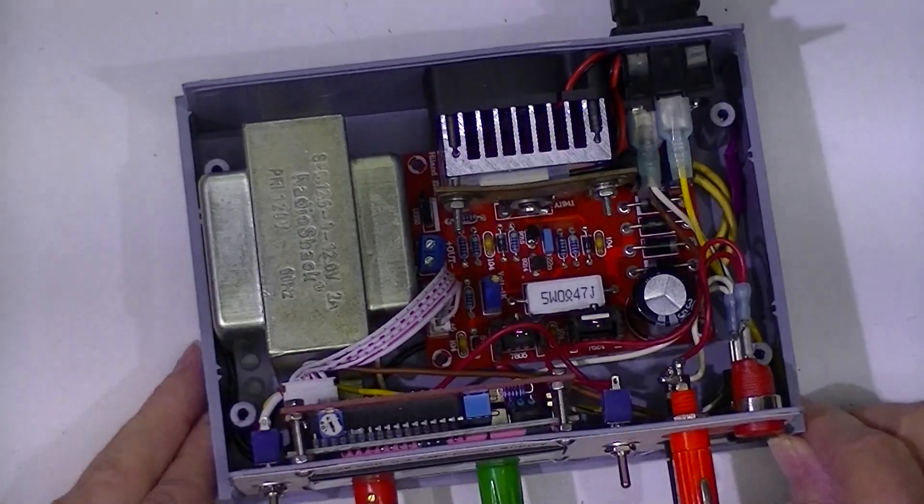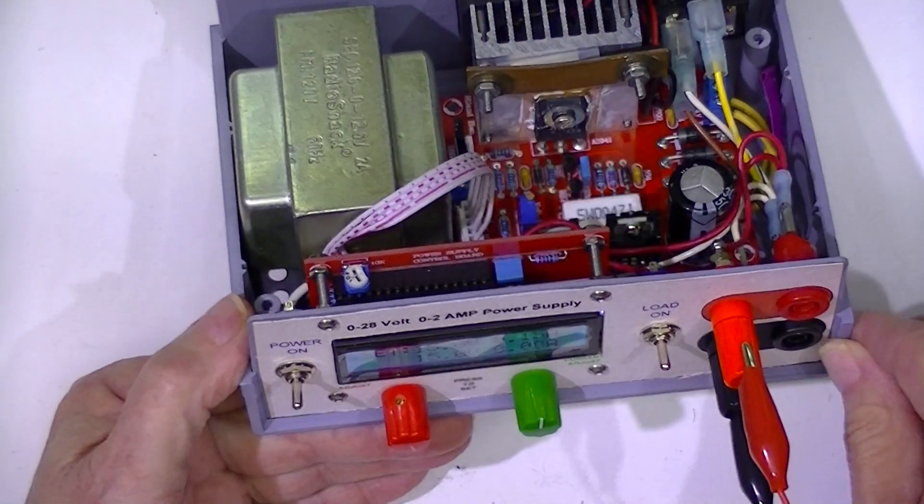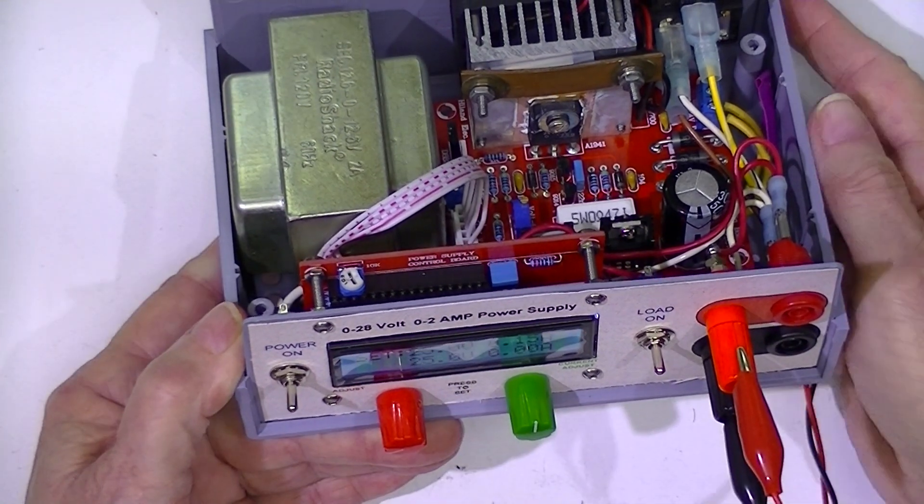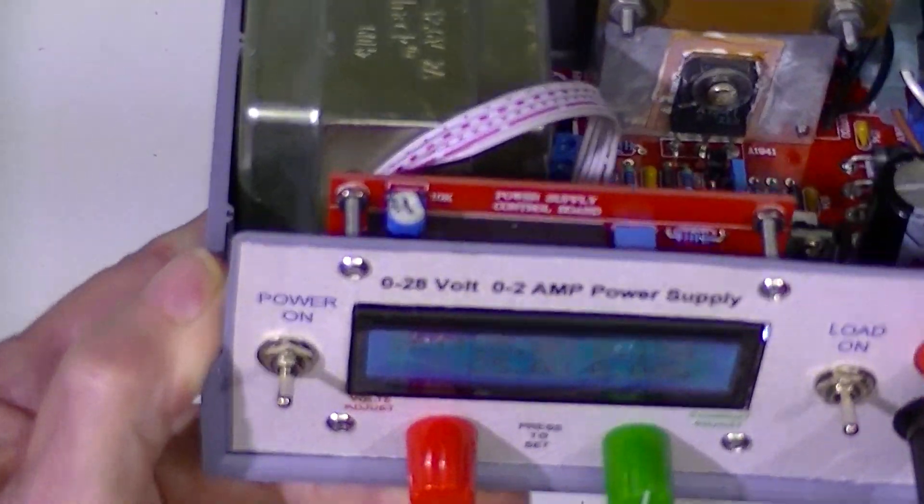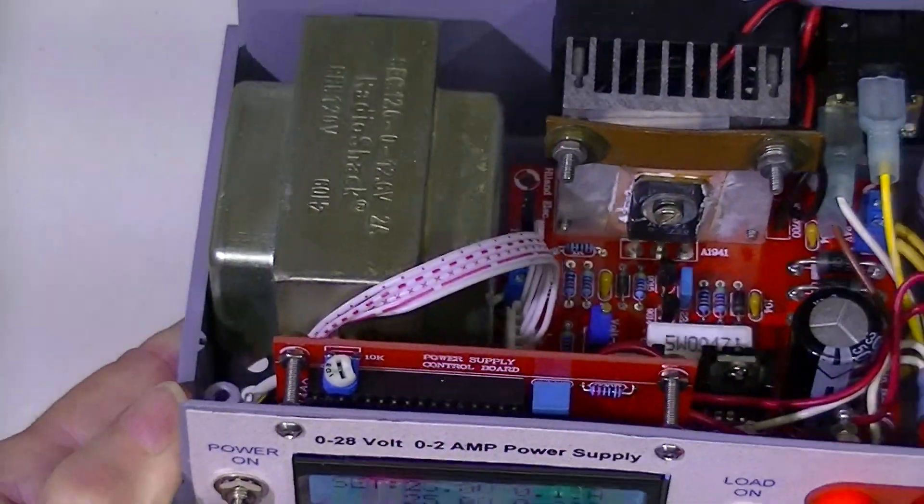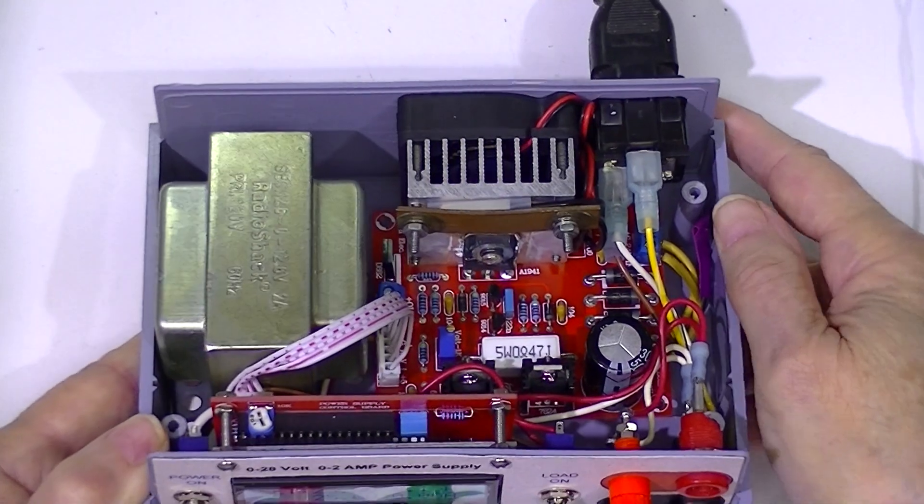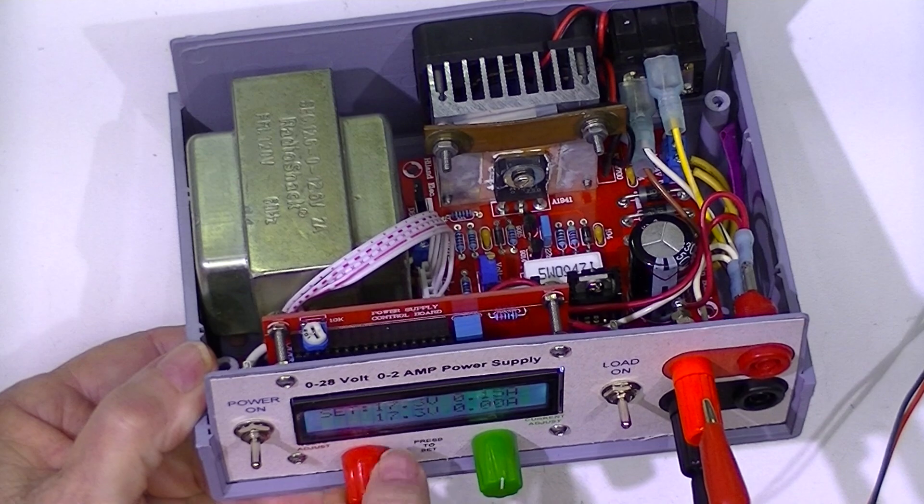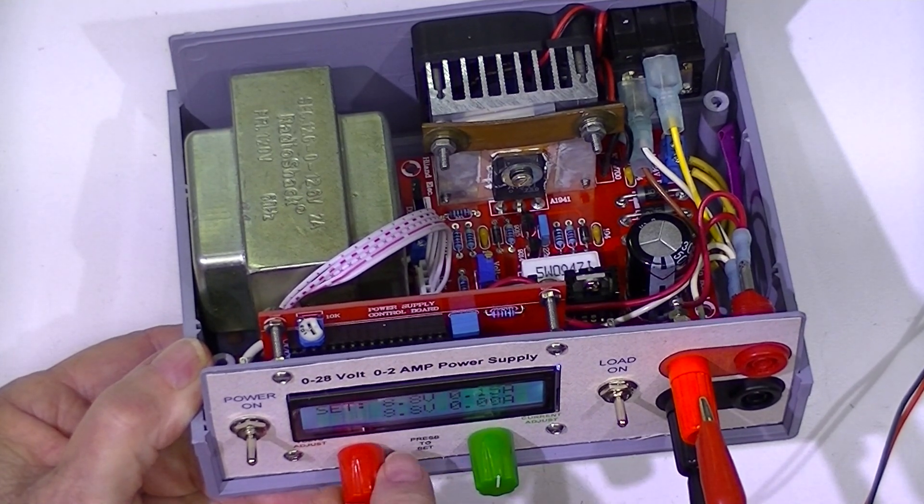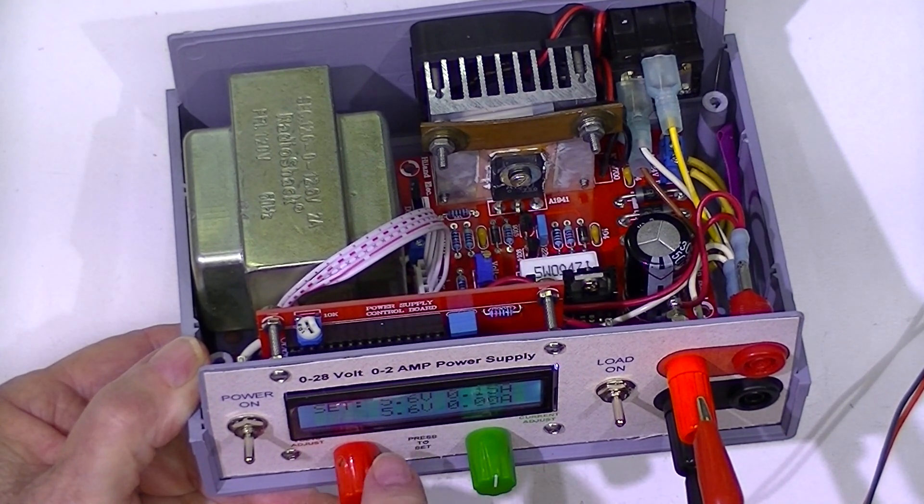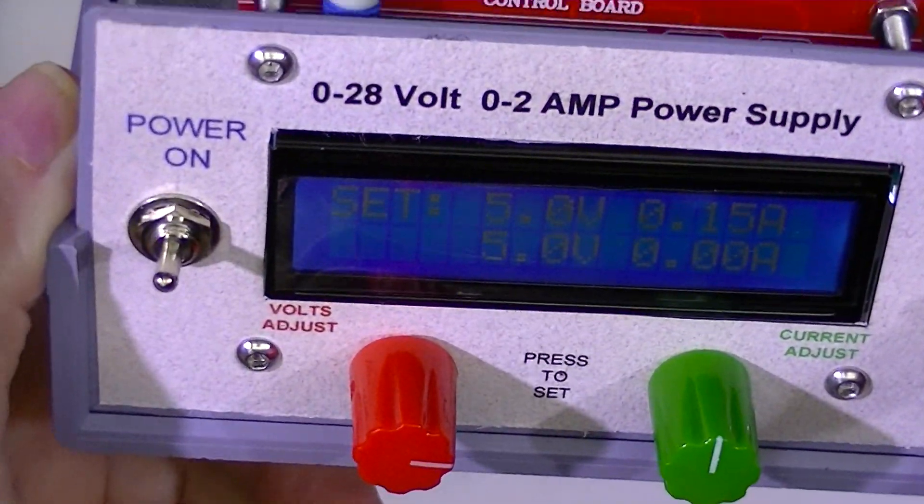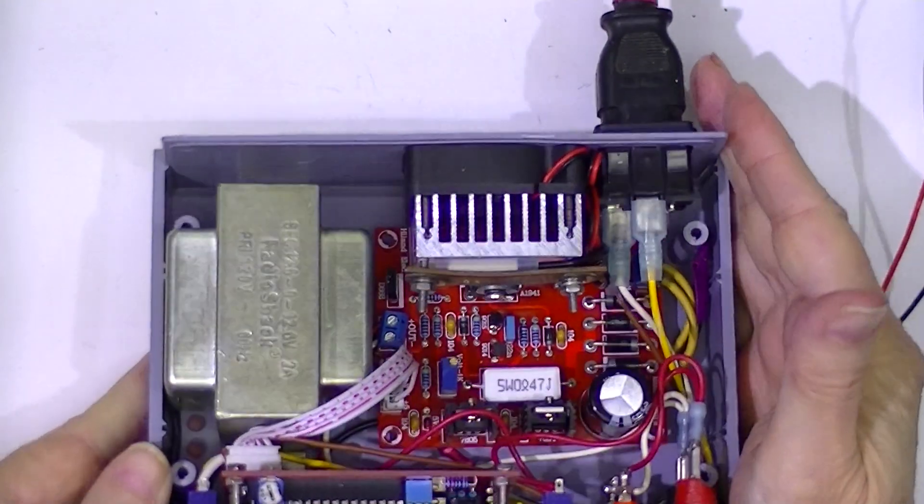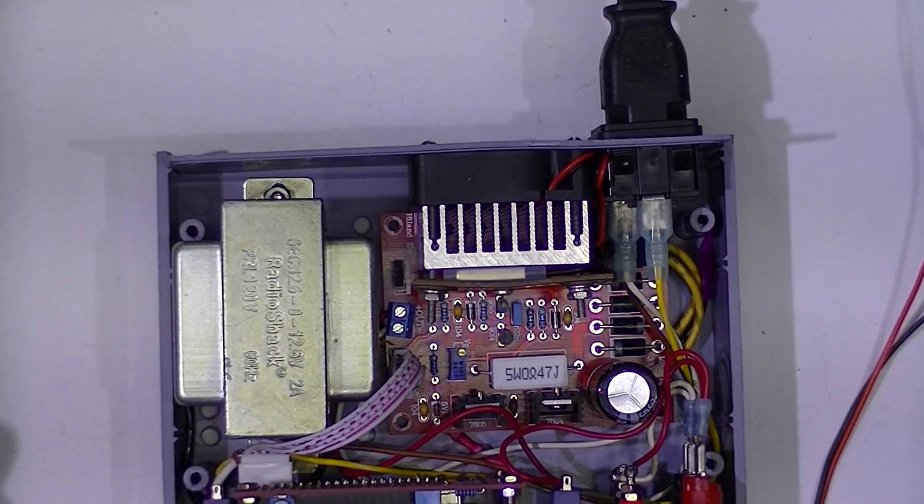So we've got 25 volts, if you can see that. And the bench meter reads 25.04 volts. We'll run it down to 5 volts. That reads, I think, maybe you can see that, 5 volts. And the bench meter is reading 5.016.